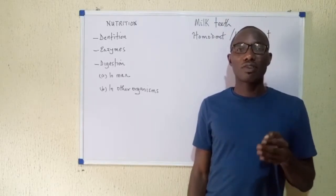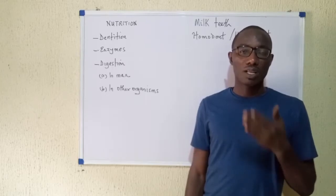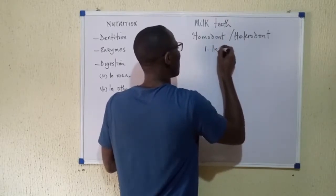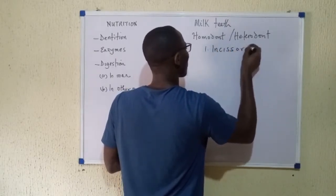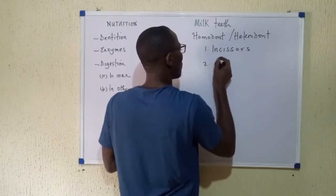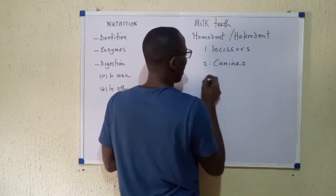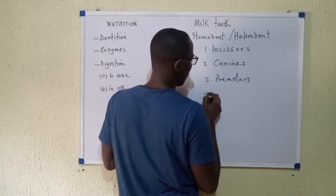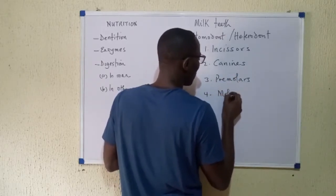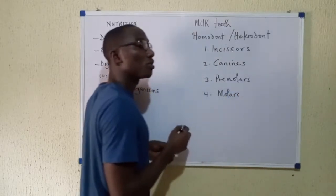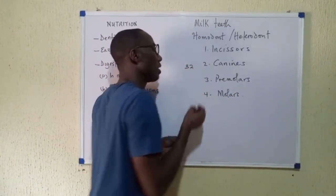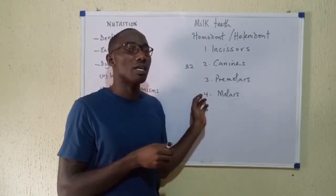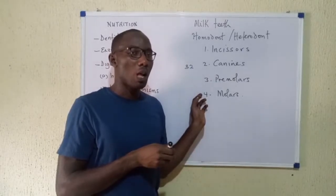The different teeth in man's mouth can be classified as follows: we have the incisors, the canines, the premolars, and finally the molars. In an adult man we have 32 teeth in total, made up of incisors, canines, premolars, and molars.